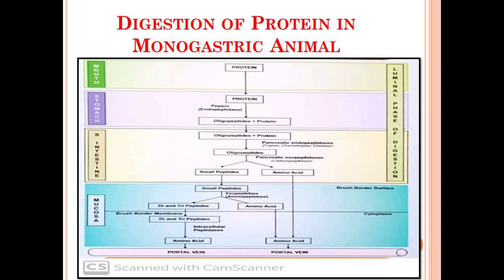As you already know, amino acid is the smallest unit of protein — the building blocks. So amino acids will remain as such, while the small peptides will undergo further conversions. The exopeptidase aminopeptidase acts on the smaller peptides at the brush border surface of the small intestine, converting them into dipeptides, tripeptides, and amino acids.